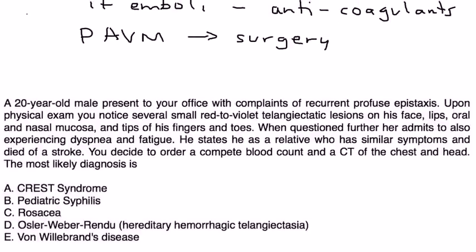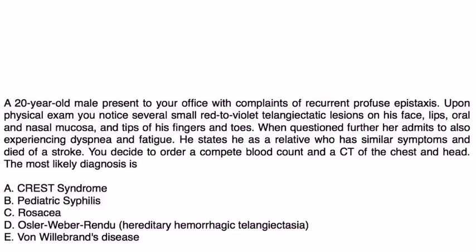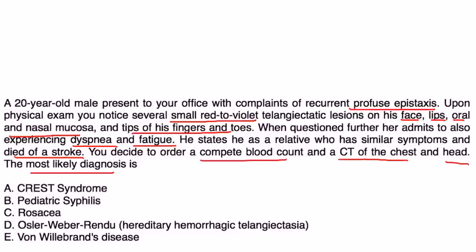Now let's take a look at a few vignettes. Twenty-year-old male presents to your office with complaints of recurrent profuse epistaxis. Upon physical exam, you notice several small red to violet telangiectatic lesions on his face, lips, oral mucosa, nasal mucosa, tips of his fingers and toes. When questioned further, he admits to also experiencing dyspnea and fatigue. He states that he has a relative who has similar symptoms and died of a stroke. You decide to order a CBC and a CT of the chest and head and most likely diagnoses. Well, the fact that he's got this telangiectasia, recurrent nosebleeds, and a little bit of a family history that has some similarity to this disorder would point to choice D.